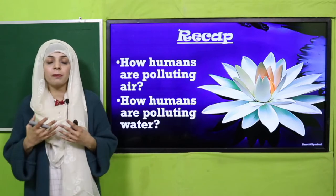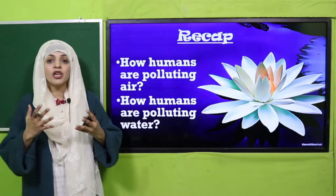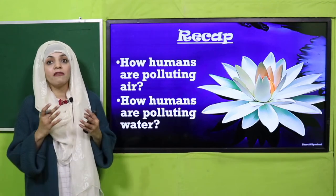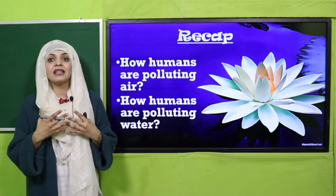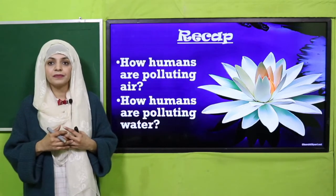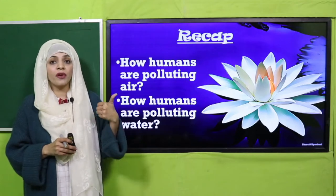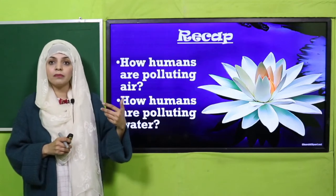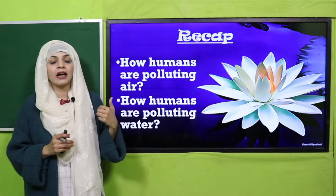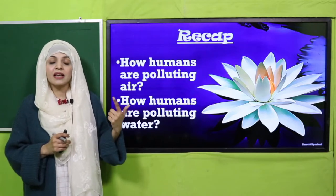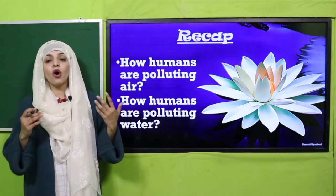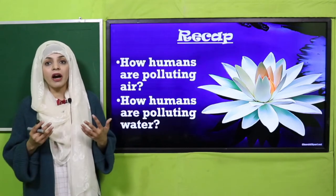Human beings, just like animals and plants, are part of the ecosystem and different habitats. How are human beings polluting the air? Number one: different vehicles - their combustion, the smoke coming from their engines, they are causing air pollution. The next is factories, then the burning of fossil fuels. They all are polluting our environment and our air.